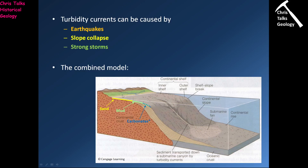We've pretty much covered the environments here. We have the continental shelf, which consists of the sand-rich high-energy inner shelf and the lower-energy mud-rich outer shelf. We have the shelf break, the continental slope, and then the buildup of material at the bottom of the continental slope, which we refer to as the continental rise.